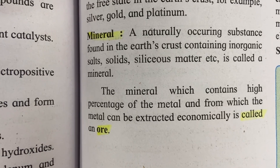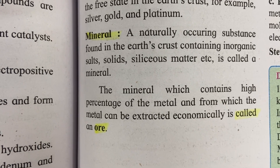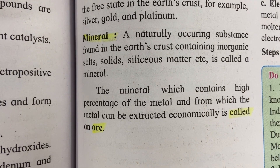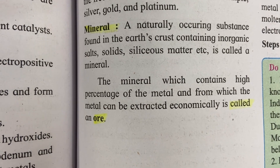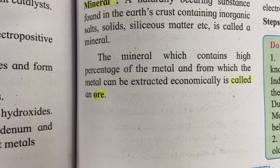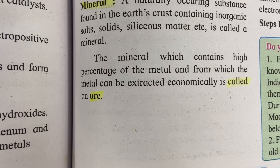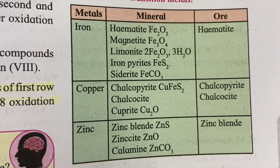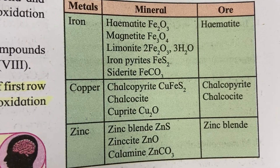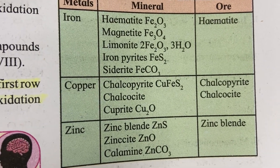Mineral: a naturally occurring substance found in the earth's crust containing inorganic salts, solids, siliceous matter, etc., is called a mineral. Ore: the mineral which contains a high percentage of the metal and from which the metal can be extracted economically is called an ore. Chemical classifications include sulfides, hematites, or chalcopyrites.